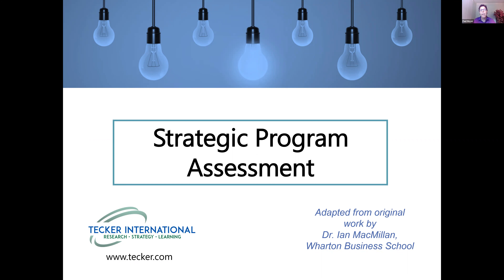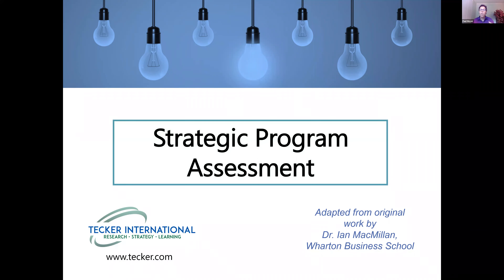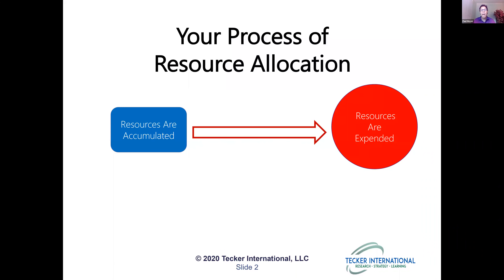How do we make decisions — and as we know, programs and services can be very political decisions for associations. How do we make those decisions in a more objective rather than subjective way, so we're making decisions for the right reasons going forward? This process we call strategic program assessment was adapted from work by Dr. Ian McMillan, who created it as a public process, though you'll see how much we've changed it to make it more targeted to the association world.